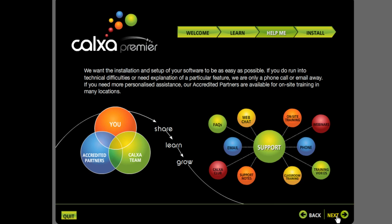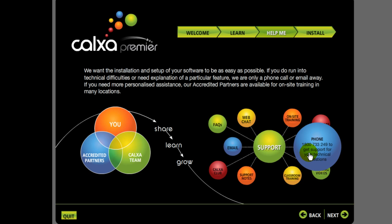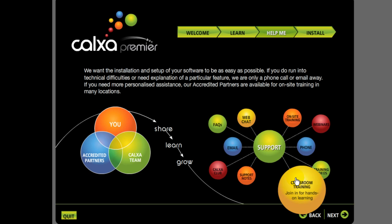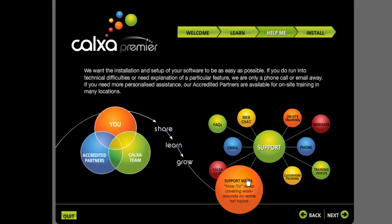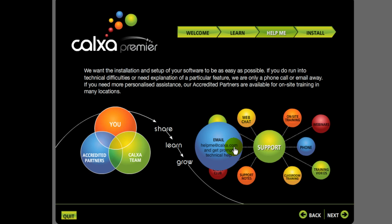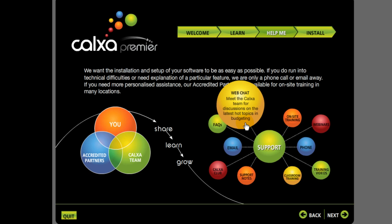I also want to tell you about the training and support that we've got available for you. On-site training is available from our accredited partners. We're running a series of webinars and details of those are online. Our phone number is 1800 733 249. These training videos are available on the website or on your CD. We'll be running classroom training over the next few months for those who like hands-on learning. Our website also contains a section with a list of support notes, and it will shortly contain information on our CalCSA club — some regular network meetings we'll be holding. You can email help@calcsa.com to get technical support. Frequently asked questions are available on our website, and we'll also be hosting web chats — like a webinar, but a lot less formal, and more about you asking questions about the things that interest you.